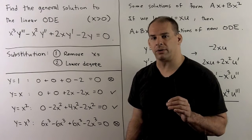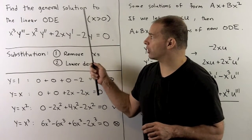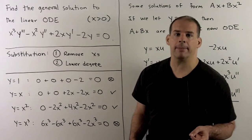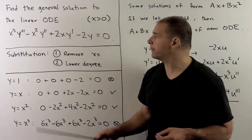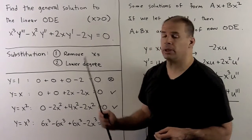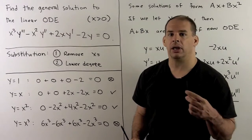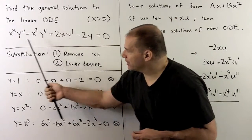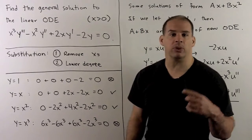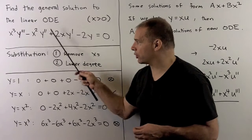Consider the following ordinary differential equations problem. We'll find the general solution to the linear ODE: X cubed Y triple prime minus X squared Y double prime plus 2X Y prime minus 2Y equals 0, where X is greater than 0. This might not be the type of equation you're used to working with. Usually when we have higher degrees, we have constant coefficients, but here we have functions of X out in front of our derivatives.